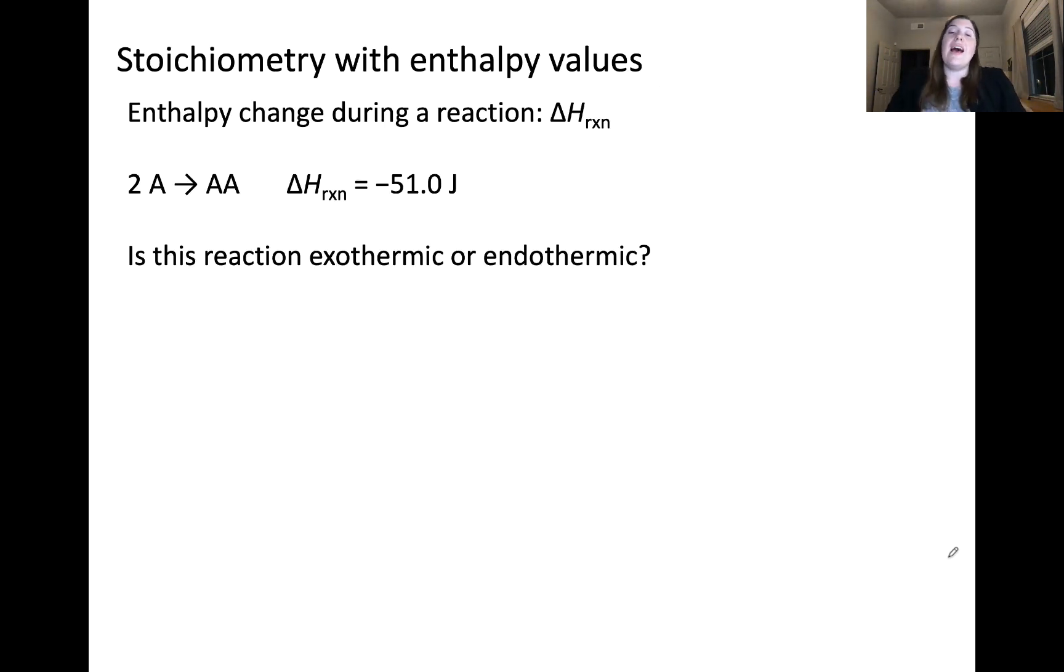Let's look at how enthalpy changes for chemical reactions. We'll use a generic chemical reaction, which is the reactants 2A forming the product AA. I'm using a generic delta H reaction here of negative 51.0 joules for this reaction. Based on this value for delta H, would you say that this reaction as written is exo or endothermic? This reaction is exothermic because the sign of delta H is negative, meaning delta H of reaction is less than zero. This means that heat is being released to the surroundings from the system.